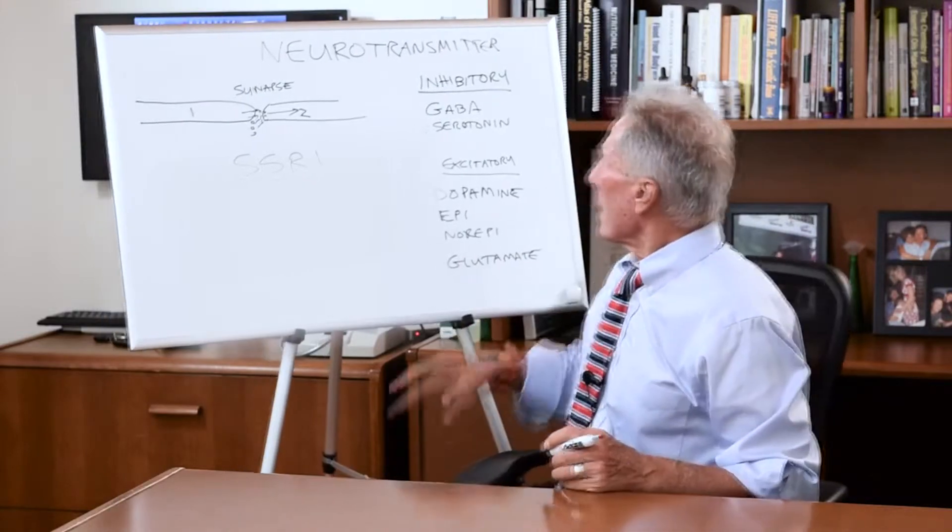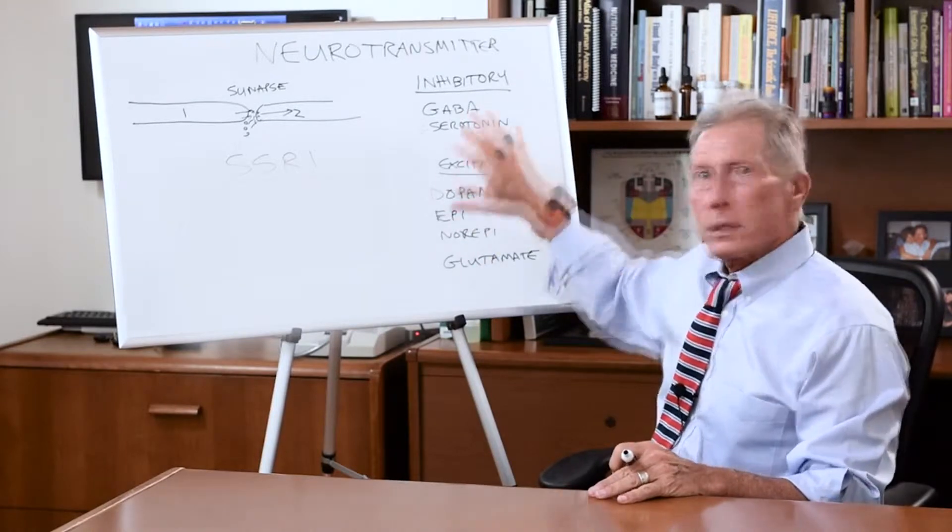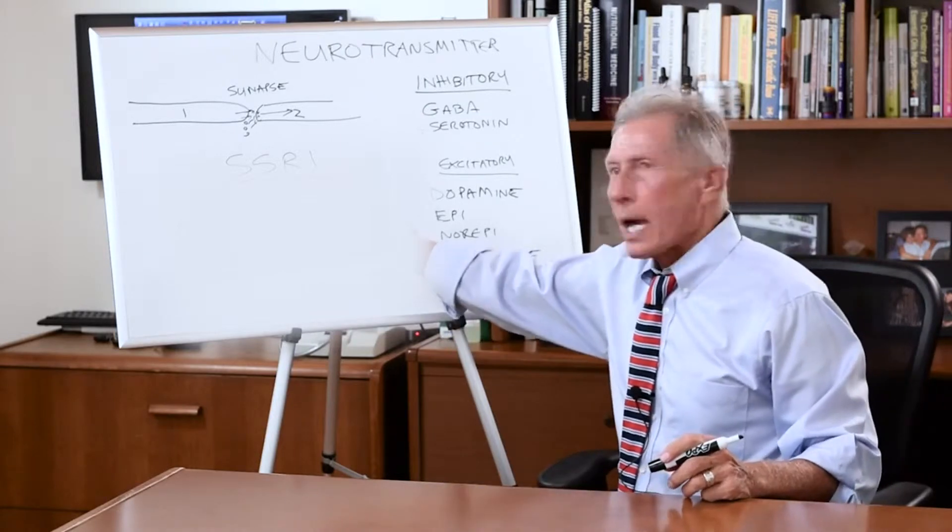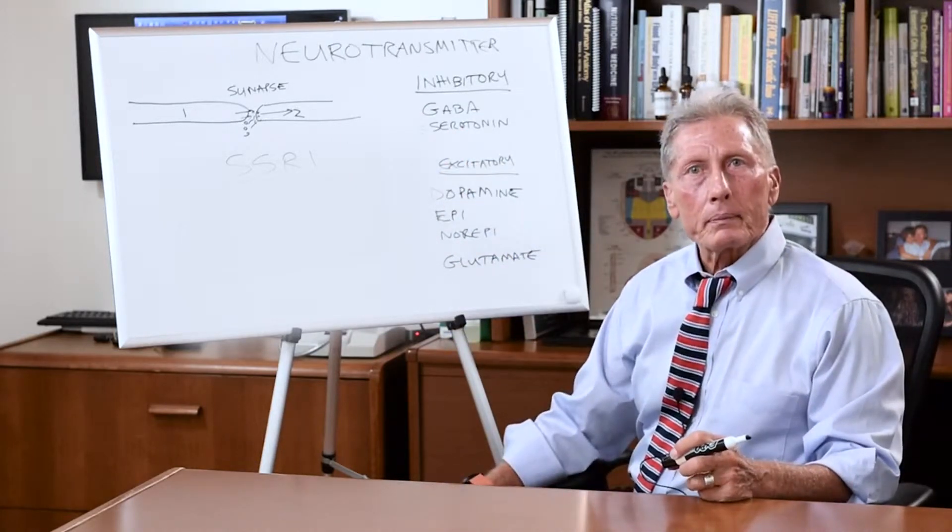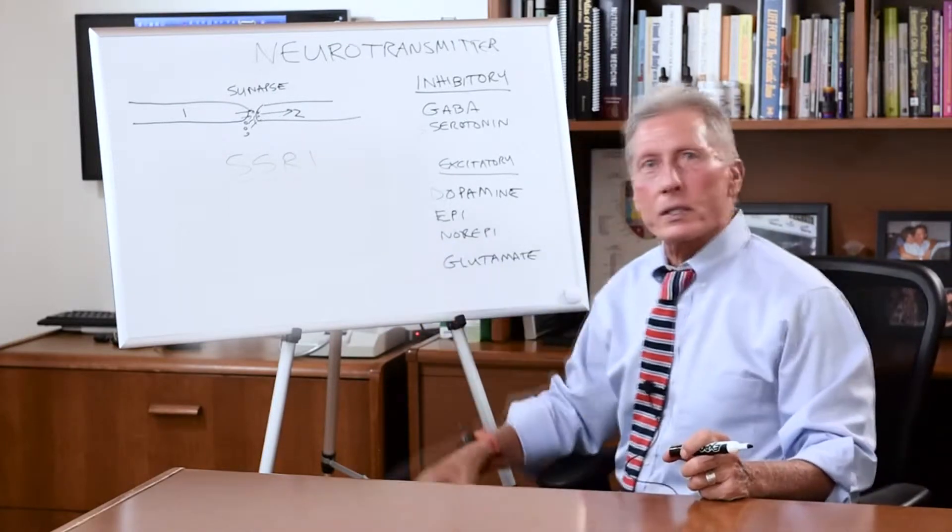Now I know, because we can measure levels of these in people in urine, that I have never seen a person on an SSRI drug that had a normal serotonin in their body. Because it doesn't help the body make more serotonin. All it does is poison the serotonin pump.